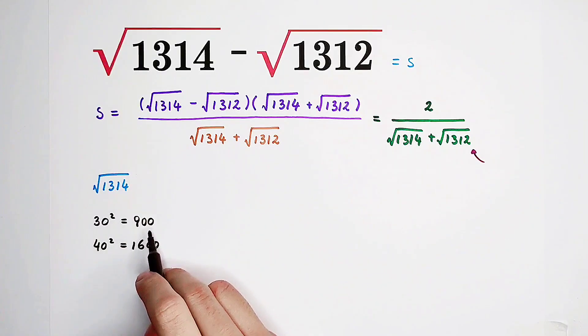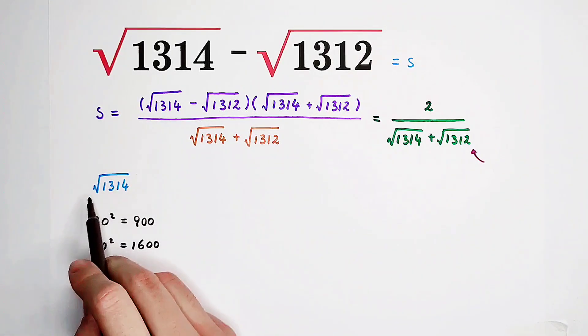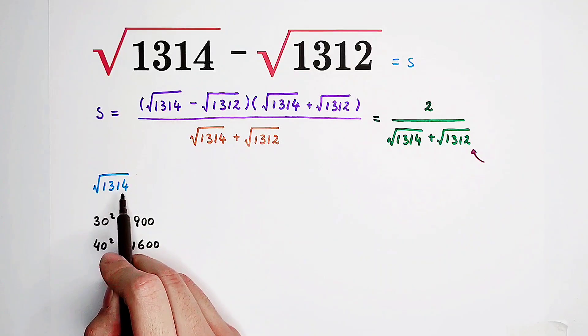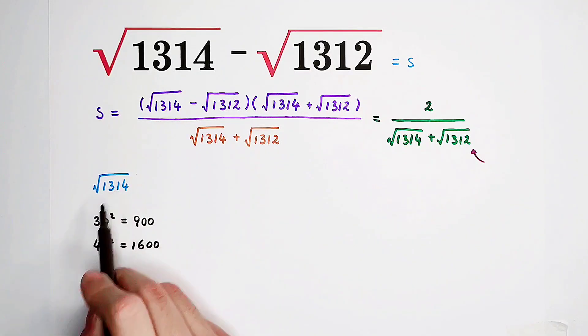However, 900 is less than this. So that means, the square root of 1314 has to be greater than 30, less than 40.